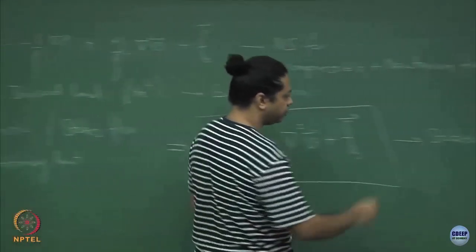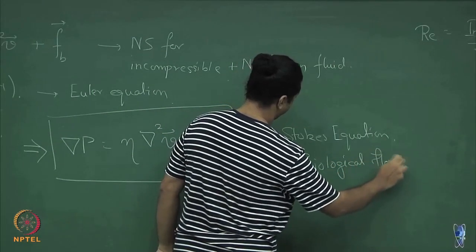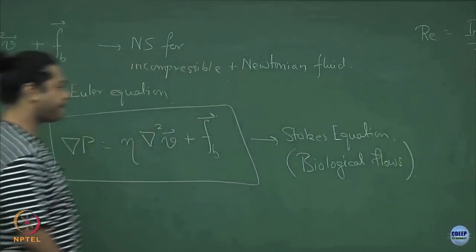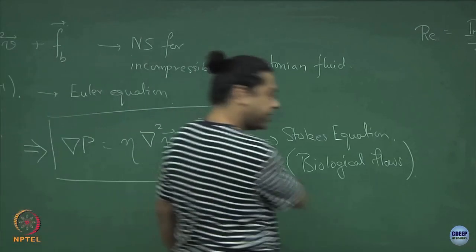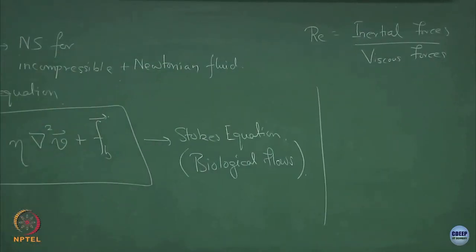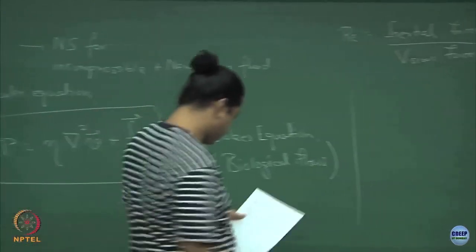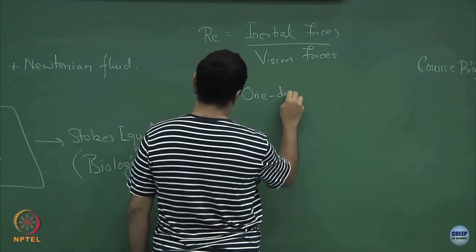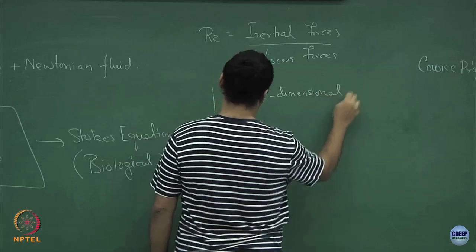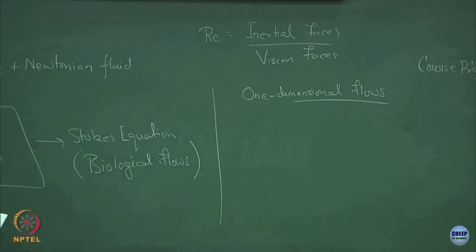When we talk of low Reynolds number physics, the hydrodynamics is effectively governed by the Stokes equation, not the full Navier-Stokes. This is the equation more relevant for biological flows mostly. There is also a different way to arrive at the Stokes equation — through the case of one-dimensional flows.